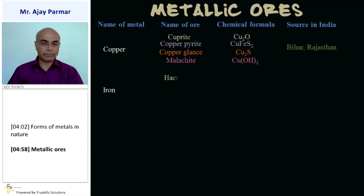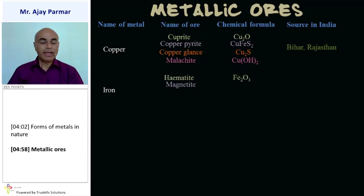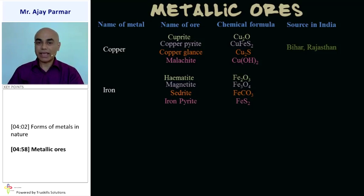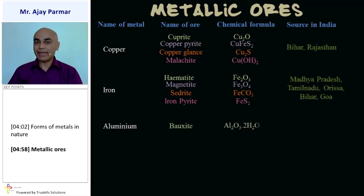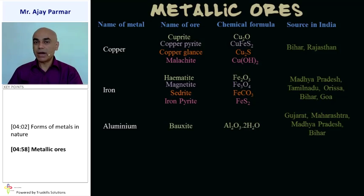The ores of iron include hematite (Fe₂O₃), magnetite (Fe₃O₄), siderite (FeCO₃), and iron pyrite (FeS₂). In India, iron ores are found in Madhya Pradesh, Tamil Nadu, Orissa, Bihar, and Goa. For aluminium, the ore is bauxite with formula Al₂O₃·2H₂O — it is a hydrated molecule. Bauxite is found in Gujarat, Maharashtra, Madhya Pradesh, and Bihar in India.